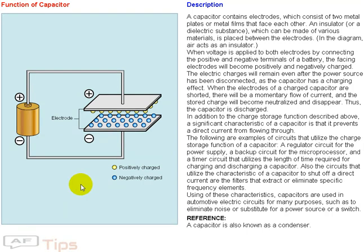The following are examples of circuits that utilize the charge storage function of a capacitor: a regulator circuit for the power supply, a backup circuit for the microprocessor, and a timer circuit that utilizes the length of time required for charging and discharging a capacitor.